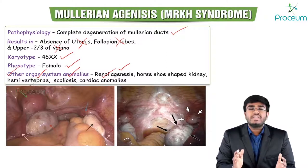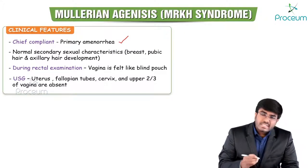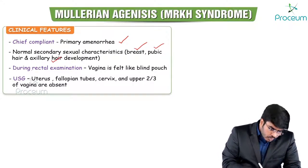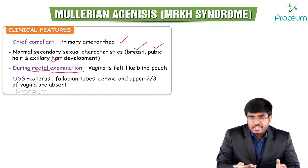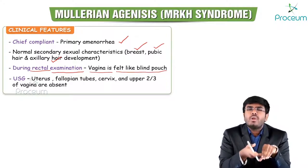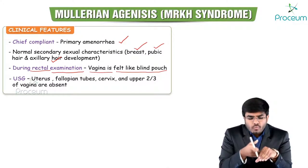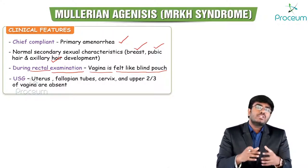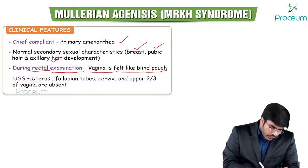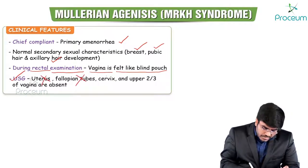Chief complaint is primary amenorrhea. Secondary sexual characters — breast, pubic, and axillary hair development — are normal. On physical/rectal examination, the vagina feels like a blind pouch — a shallow depression — because only the lower one-third of vagina is present (from the urogenital sinus). Upper two-thirds of vagina, derived from Müllerian ducts, is absent. Ultrasonography confirms absence of uterus, fallopian tubes, cervix, and upper two-thirds of vagina.